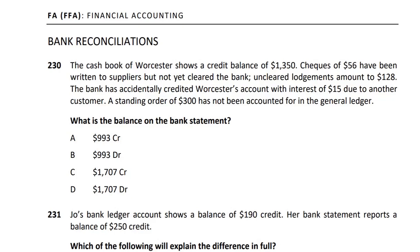Uncleared lodgement amount is 128. The bank had accidentally credited the Worcester account with interest, which is due to another customer. A standing order of $300 has not been accounted for in the general ledger.